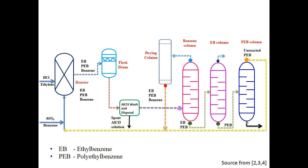The unreacted benzene products are fed into the benzene column. The benzene is recovered by the benzene column and dried in the drying column to be recycled back into the reactor.